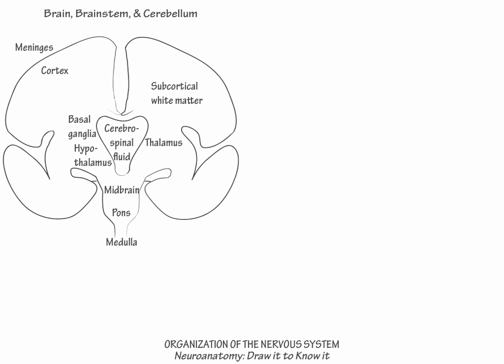The brainstem also contains many additional neuronal pools essential for survival, as well as the fiber tracts that pass between the brain and spinal cord. On the posterior aspect of the brainstem, draw the leafy hemispheres of the cerebellum. The cerebellum is important for balance and orientation, postural stability, and coordination.